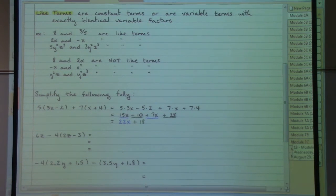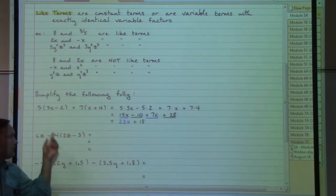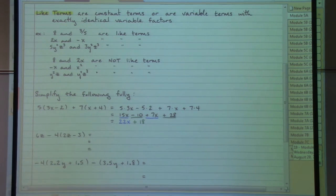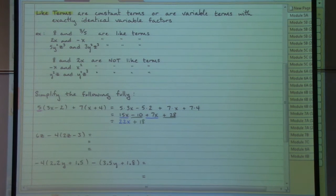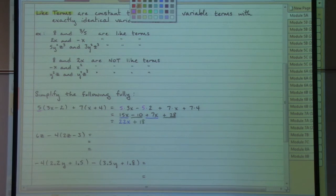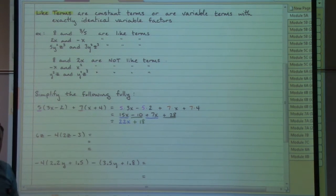Like terms can be put together with that friendly idea of apples with apples, oranges with oranges. Sometimes we have to do extra work—you might have heard of distributing before. In this example, we have a 5 in front of the first set of parentheses, so that 5 needs to be distributed so it attaches to the 3x and to the negative 2. Then we have the 7 in front of the second set of parentheses that needs to be distributed so it attaches to the x and to the 4.